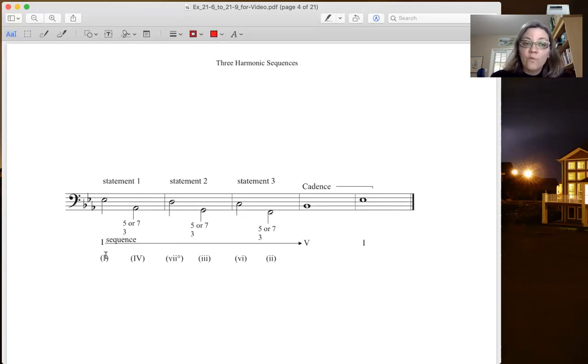In statement 1, we go from a tonic and then we end up down a fifth, which gets us on the four chord or the subdominant. That subdominant can be either a triad or a seventh chord. Then we move up a fourth. That gets us to the seven diminished triad. This is the only time when you're allowed to use that seven diminished triad because it's within this pattern that repeats.